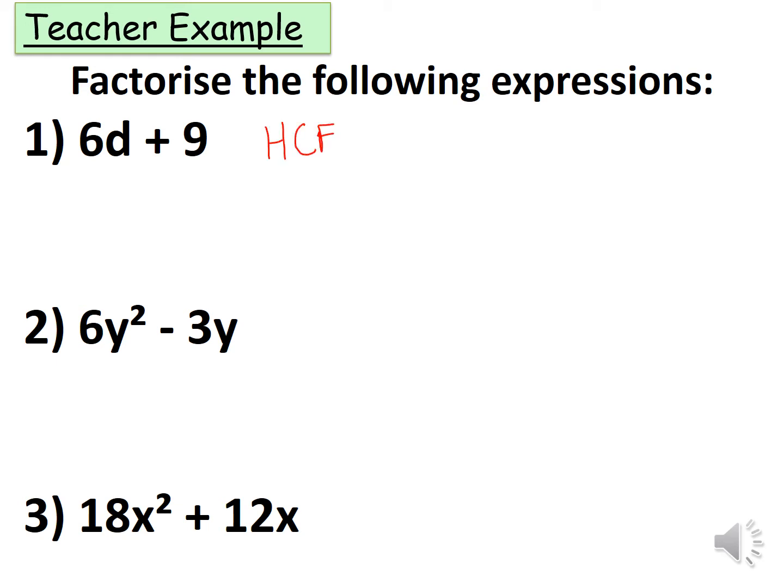Therefore we need to put 3 outside the bracket and divide 3 by the terms 6d plus 9. So 6d divided by 3 gives me 2d, and 9 divided by 3 is plus 3.